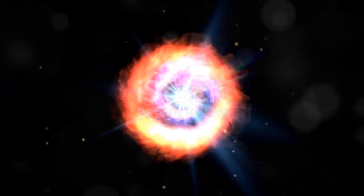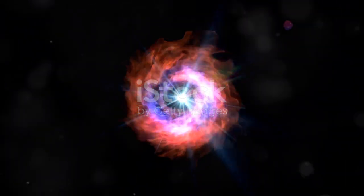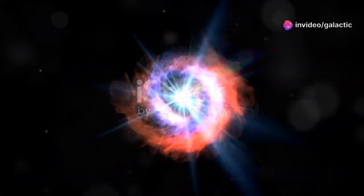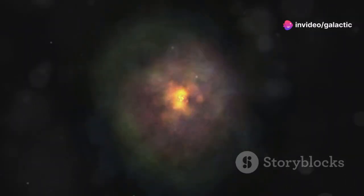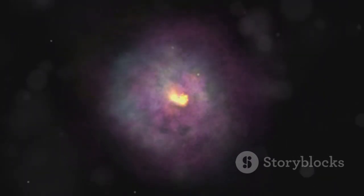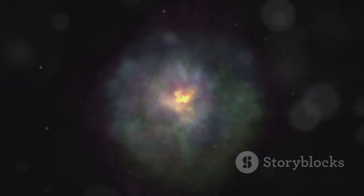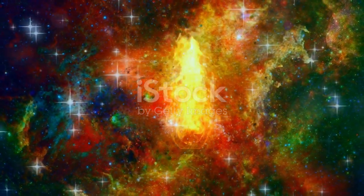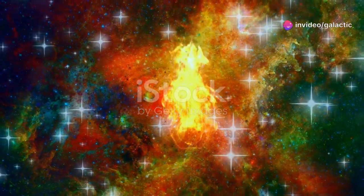These events, ranging from massive eruptions to the ejection of stellar material, paint a vivid picture of a star in its final throes. Each eruption is a violent expulsion of energy and matter, a clear signal that Betelgeuse is struggling to maintain its equilibrium. Imagine a cosmic volcano, spewing forth plumes of superheated gas and dust.